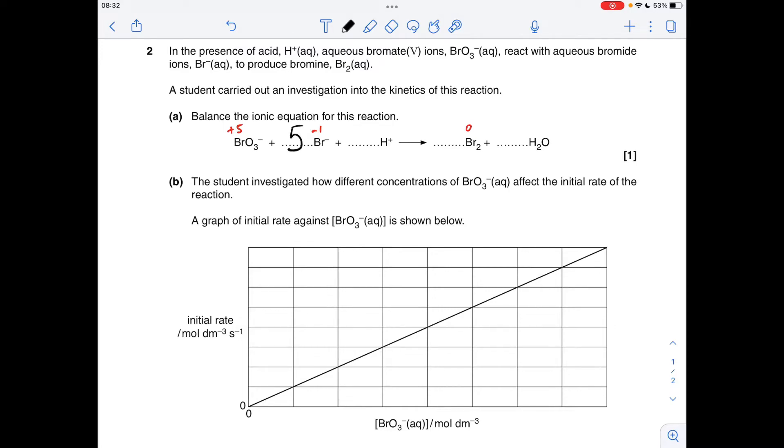What that means is we're going to need a five in front of that Br minus ion. So now the overall decrease is still five, but now the overall increase is five. Now we've got that five in, we don't want to touch these at all because we don't want these to change.